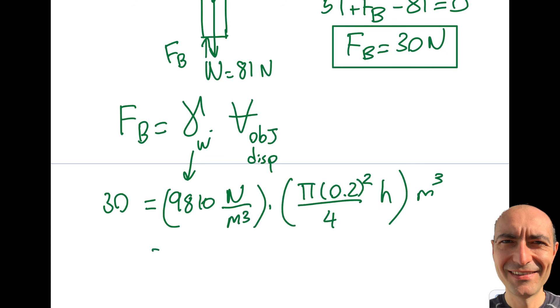Okay, so from here, you're going to see that 30 is equal to... So this is going to be 4, 0.01 up there. So it's going to be 98.1 π h.